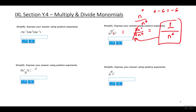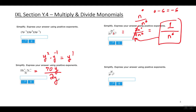For this example, simplify the top first: 10 times 7 is 70, and y squared times y to the negative one power — adding exponents — gives y to the first power. So the top is 70y and the bottom is 2y. The y's cancel, and 70 divided by 2 is 35. The answer is 35.